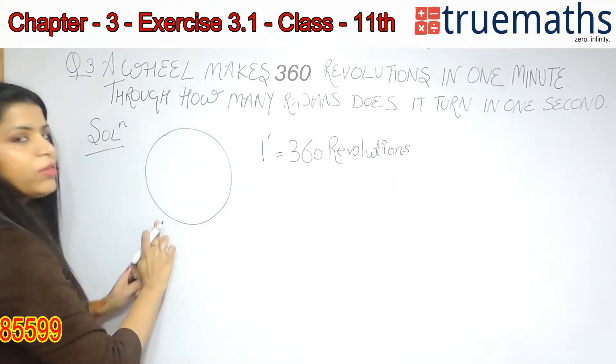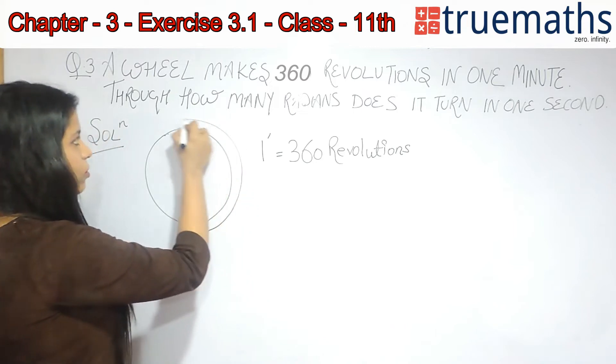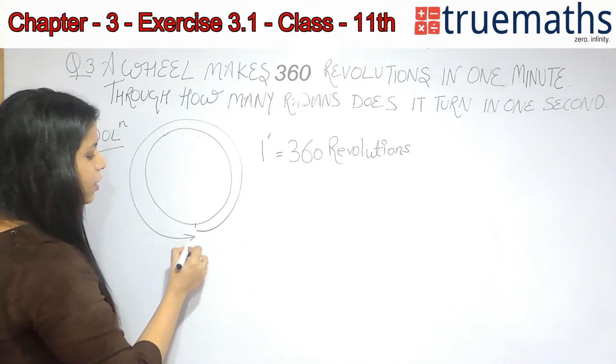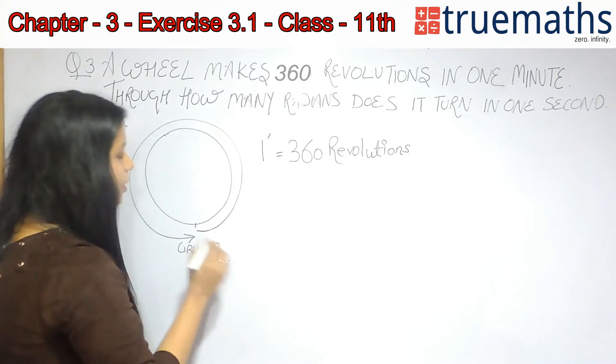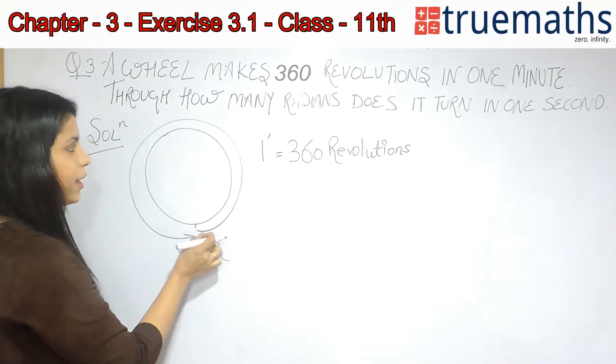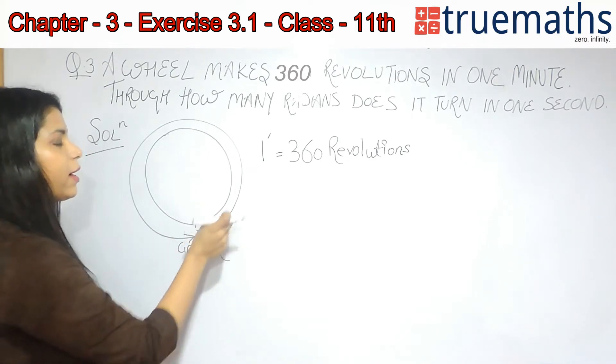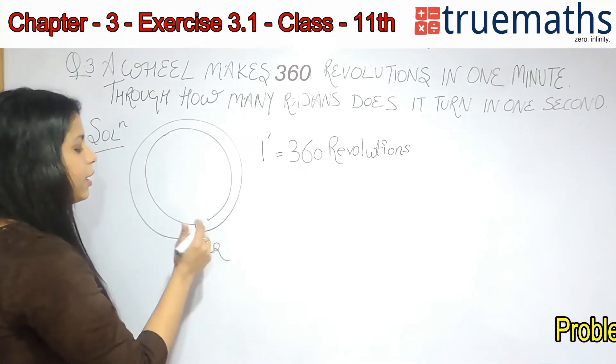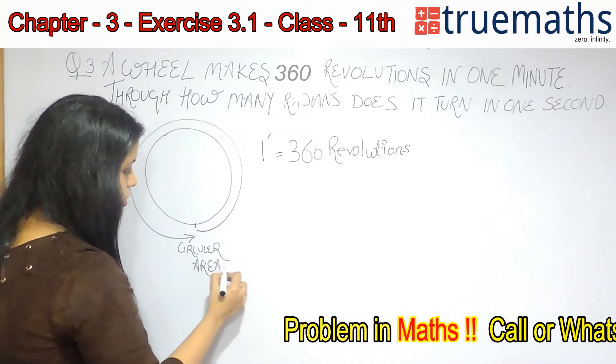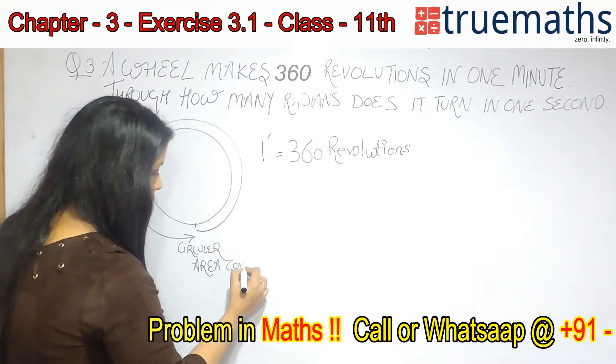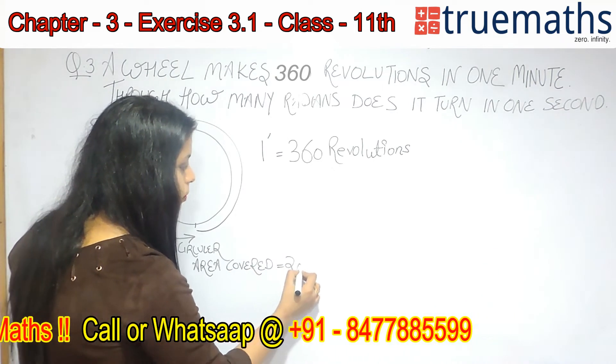So the wheel is moving. The path covered by the wheel is circular. And we know that the area covered by a complete motion of a circle is equal to 2πr.